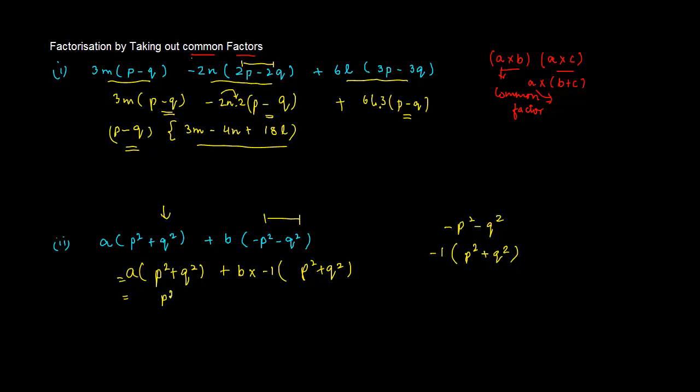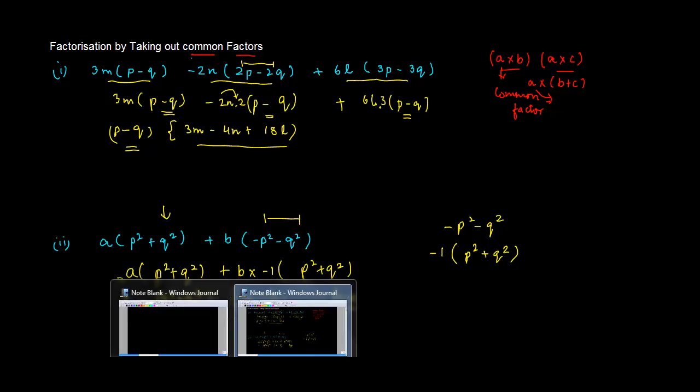Then we take P square plus Q square as common. What are we left with? We are left with A, and B into minus 1 will give you minus B, which is your answer.